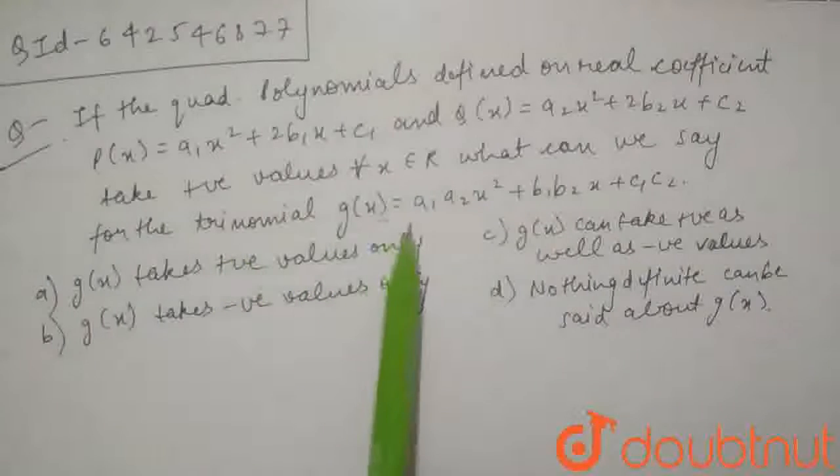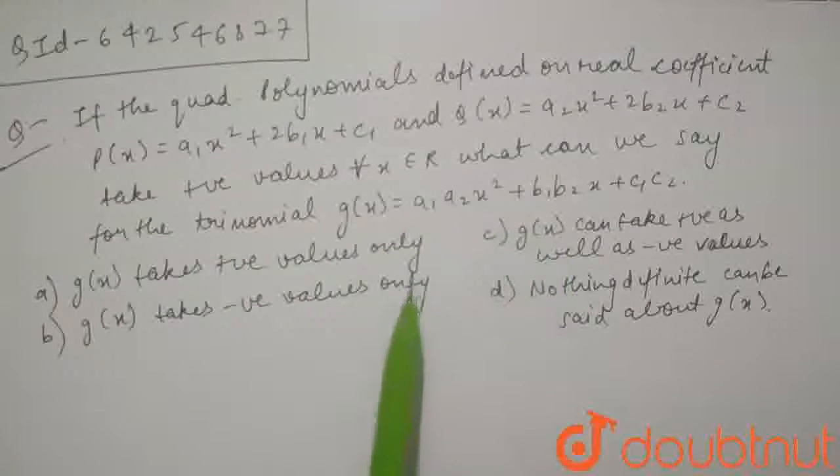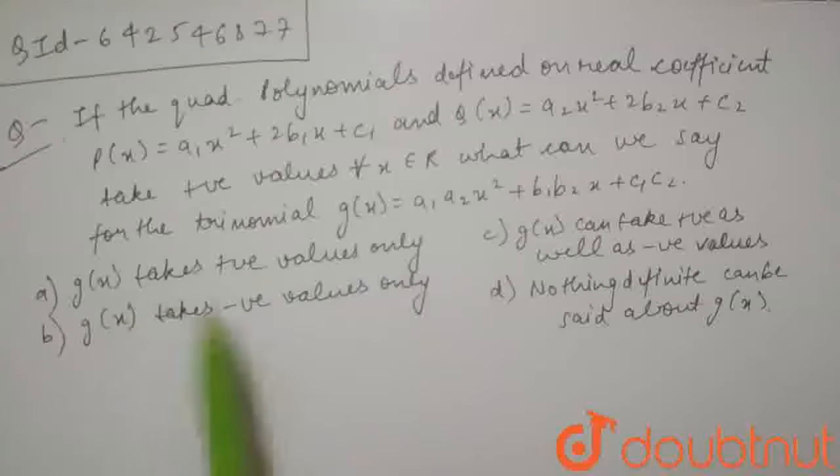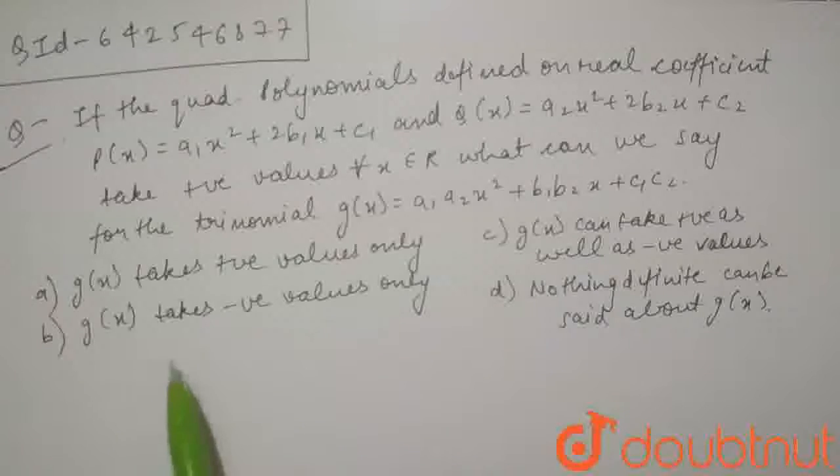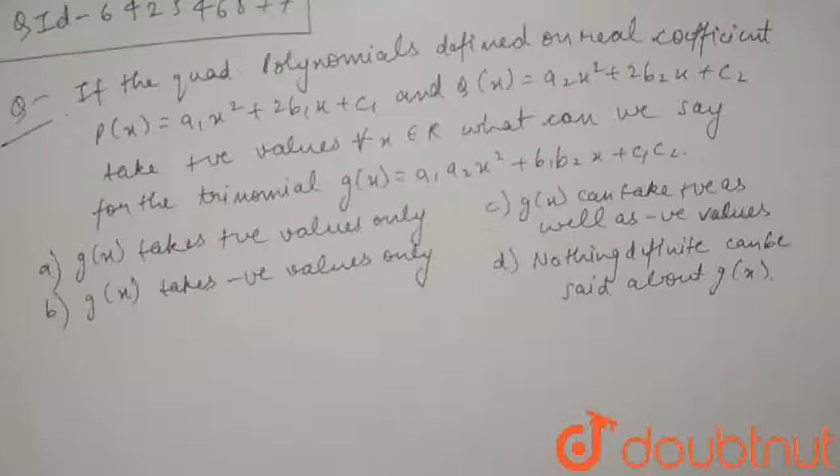can we say for the trinomial g(x) = a₁a₂x² + b₁b₂x + c₁c₂? Option a: g(x) takes positive values only. Option b: g(x) can take positive values as well as negative values. Option c: g(x) takes negative values only. Option d: nothing definite can be said about g(x).